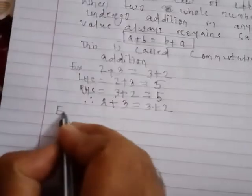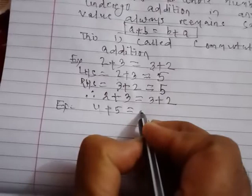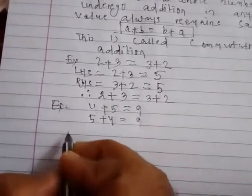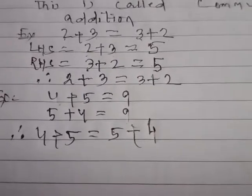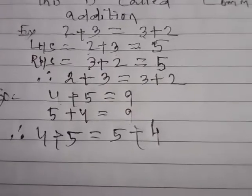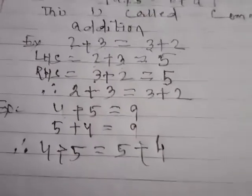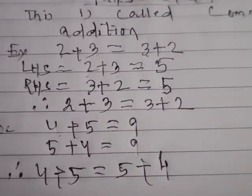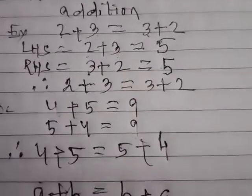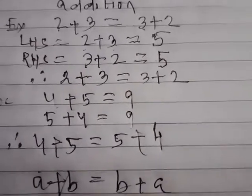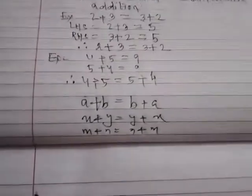Similarly, another example: 4 plus 5 is equal to 9, and 5 plus 4 is also equal to 9. Hence 4 plus 5 is equal to 5 plus 4. The same numbers are being added but their order is changed, and the value remains the same. If A and B are two whole numbers then A plus B equals B plus A; X plus Y equals Y plus X; M plus N equals N plus M. This is the commutative law of addition.